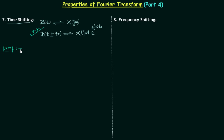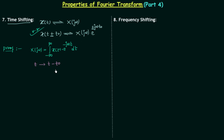To prove it, I will first write the Fourier transform: X(jω) = integral from minus infinity to infinity of x(t) multiplied by e^(−jωt) dt. As we are performing the time shifting operation, we will replace t by t minus t0. I am taking the case of right shifting; you can take the case of left shifting also.